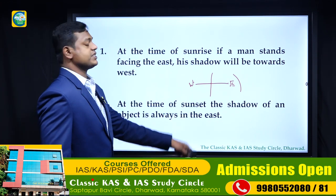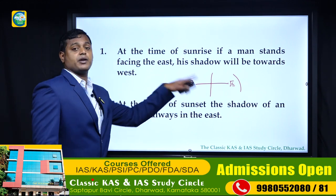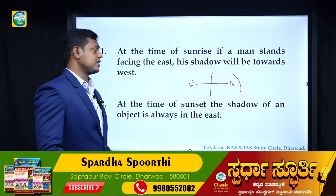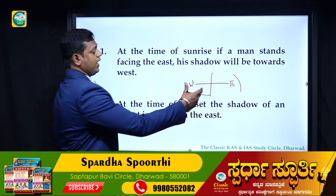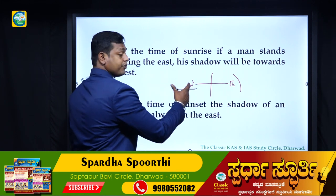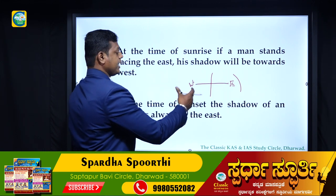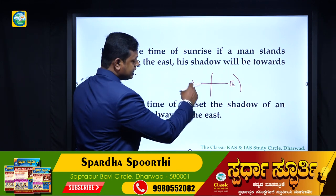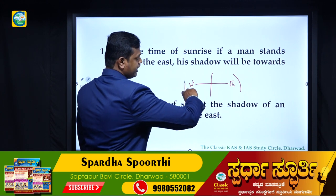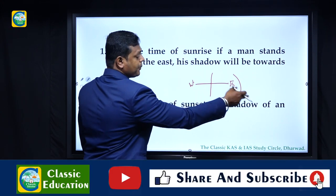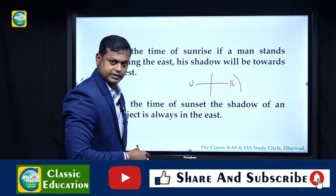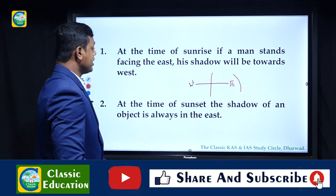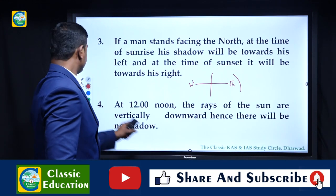Point number two: at the time of sunset, the shadow of an object is always in the east. This is the reverse - the sun sets in the west, so the shadow falls in the opposite direction, which is east. Remember this second shadow rule.